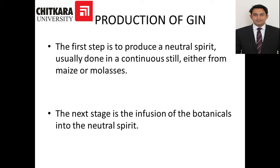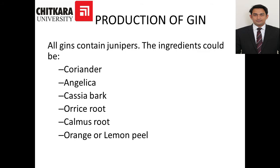For the production of Gin we can use maize, molasses, or any other combination of grains, depending on the country. The next stage is the infusion of botanicals into the neutral spirit. The most important botanical is juniper berries — all gins must contain juniper berries, as it is the critical ingredient. Apart from juniper berries, other flavorings can include coriander, angelica, cassia bark, orris root, calamus root, and orange or lemon peel.